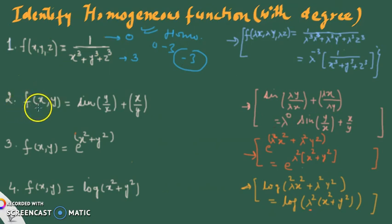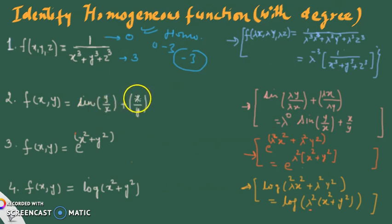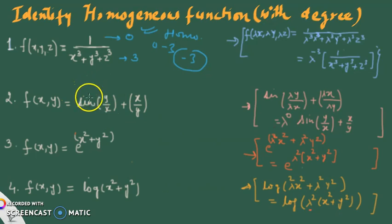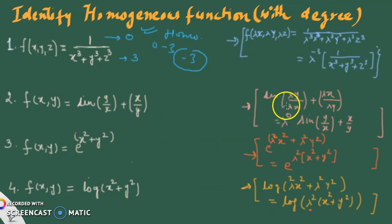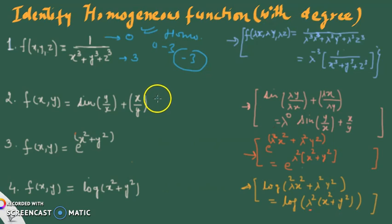The second example is a function of two variables: sin(y/x) + x/y. Here I have one term as a sine function and another as a rational expression. The degree of numerator and denominator in the argument is the same — both degree one — so they cancel. If you have a trigonometric, inverse trigonometric, exponential, or logarithmic term, the power should cancel and the expression should be of degree zero. Substituting λy and λx, lambda cancels and we get the function back, so we can write λ⁰. It is a homogeneous function of degree zero.